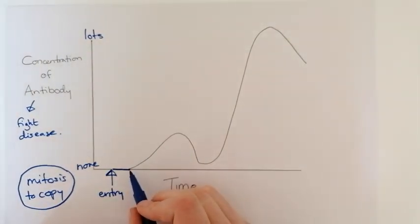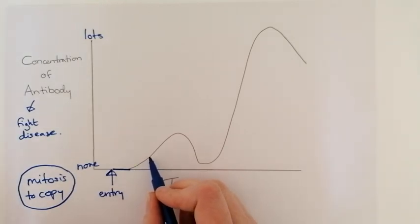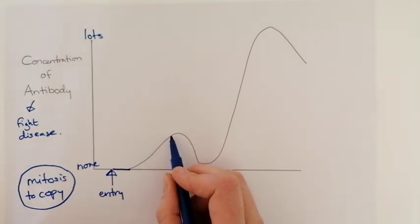As the graph goes up the white blood cells that we have got start to make antibodies. We get a few more antibodies being made because there are now a few more white blood cells and we produce a maximum up to this point here.